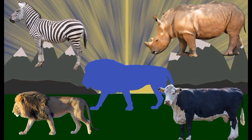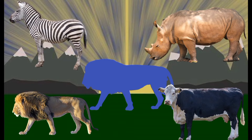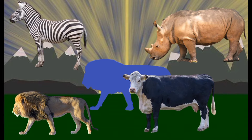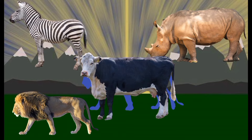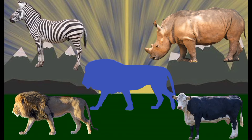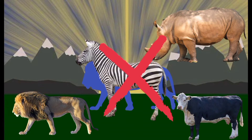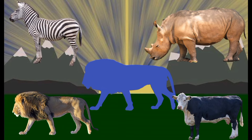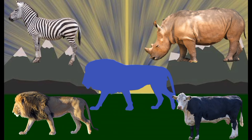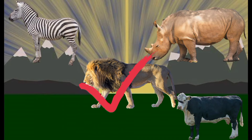What animal is this? Is this the right animal? No, this is the wrong animal. Let's try again. Is this the right animal? Oh no, that's the wrong picture. So which animal is correct? Is this correct? Oh no, this is also still the wrong animal. So which animal is this? Yes, this is a proper animal.